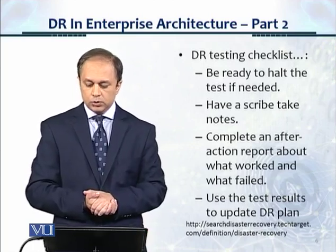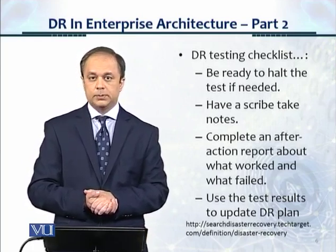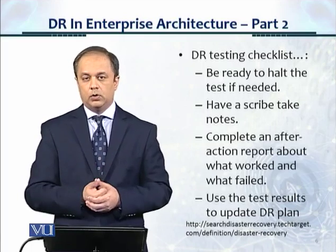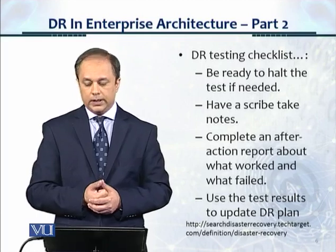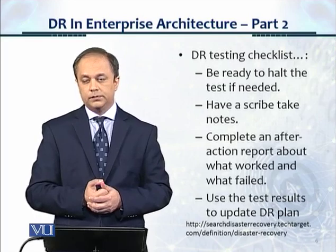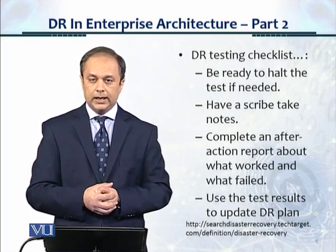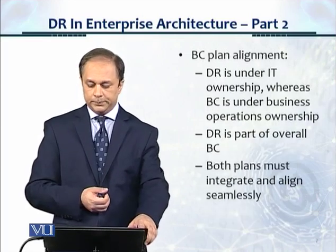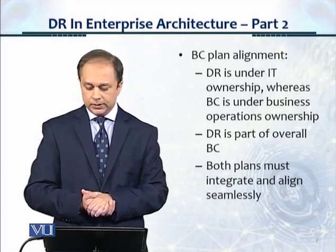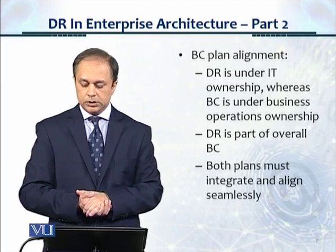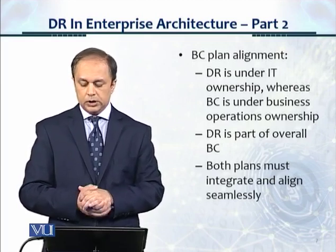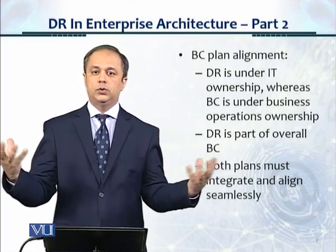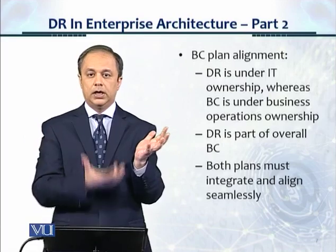In the DR testing checklist, be ready to halt the test if it's not working as per the plan or something is missing. Have a person take notes to create a script of the entire test — what happened and at what time — for record purposes. Complete an after-action report about what worked and what failed so you can take actions to improve. Use the test results to update the DR plan as well. The business continuity plan alignment requires that DR is always under IT ownership, whereas business continuity is under business operations ownership. DR is part of the overall business continuity and both plans must integrate and align seamlessly — they can't exist as silos.